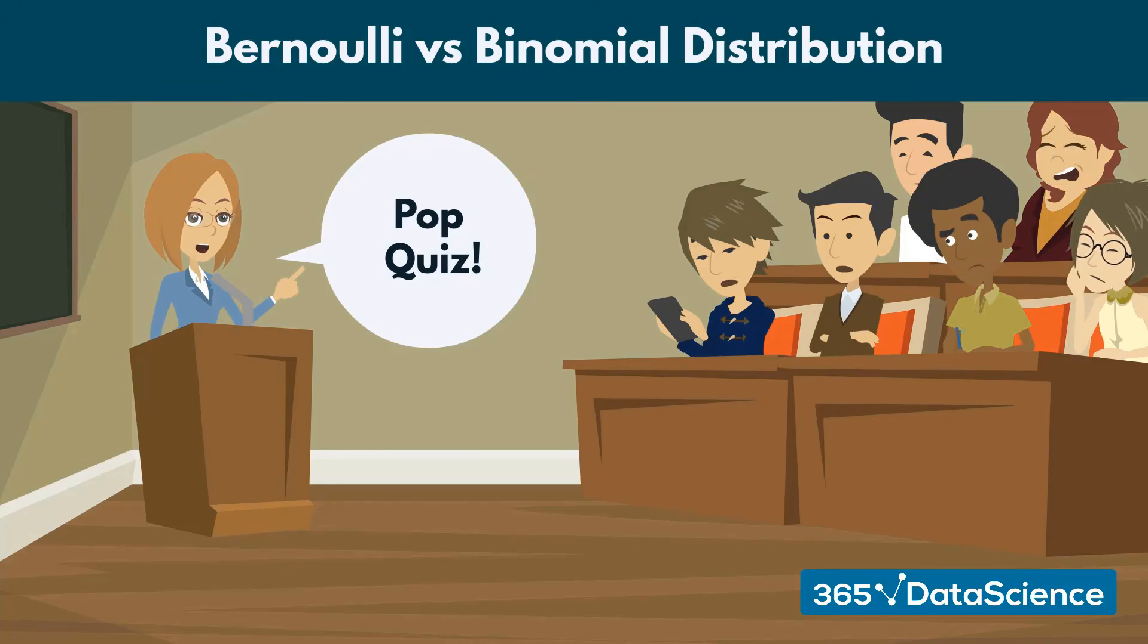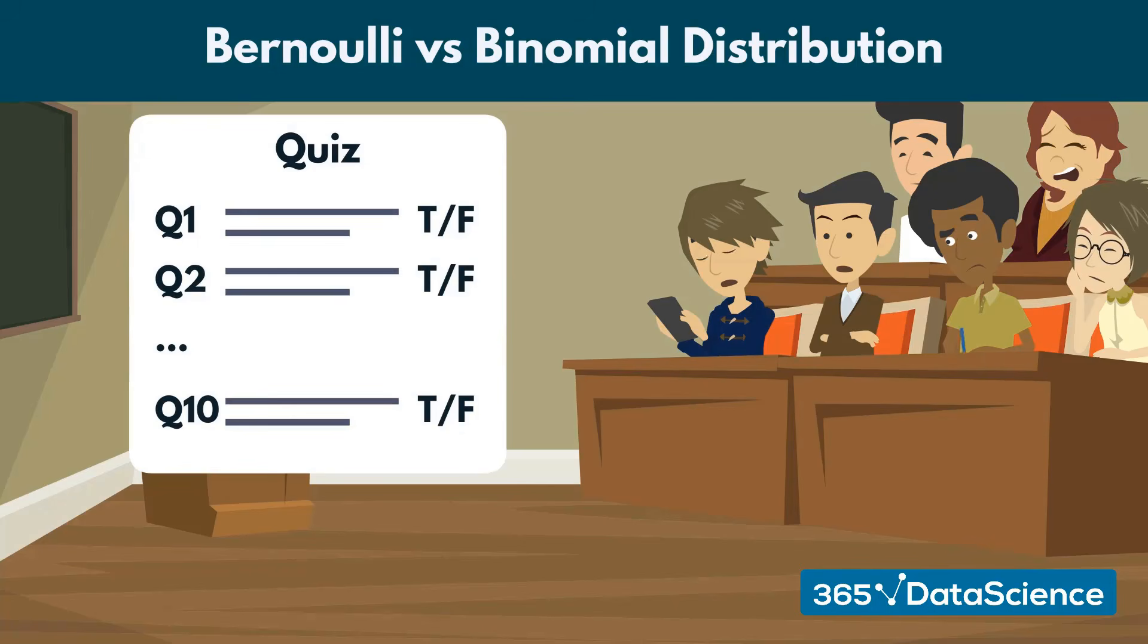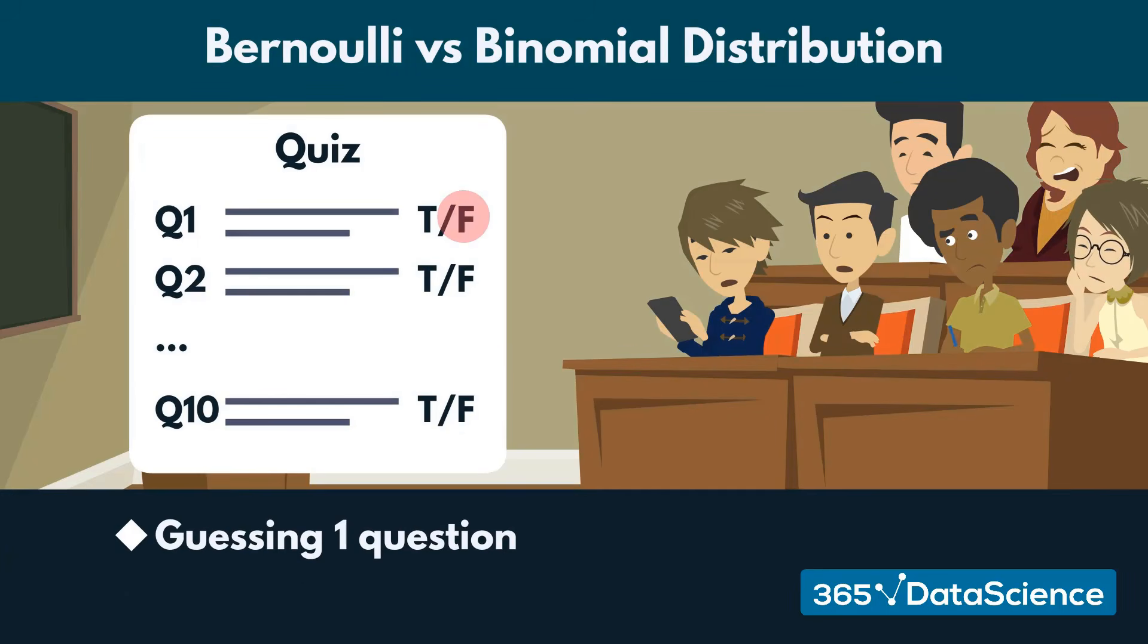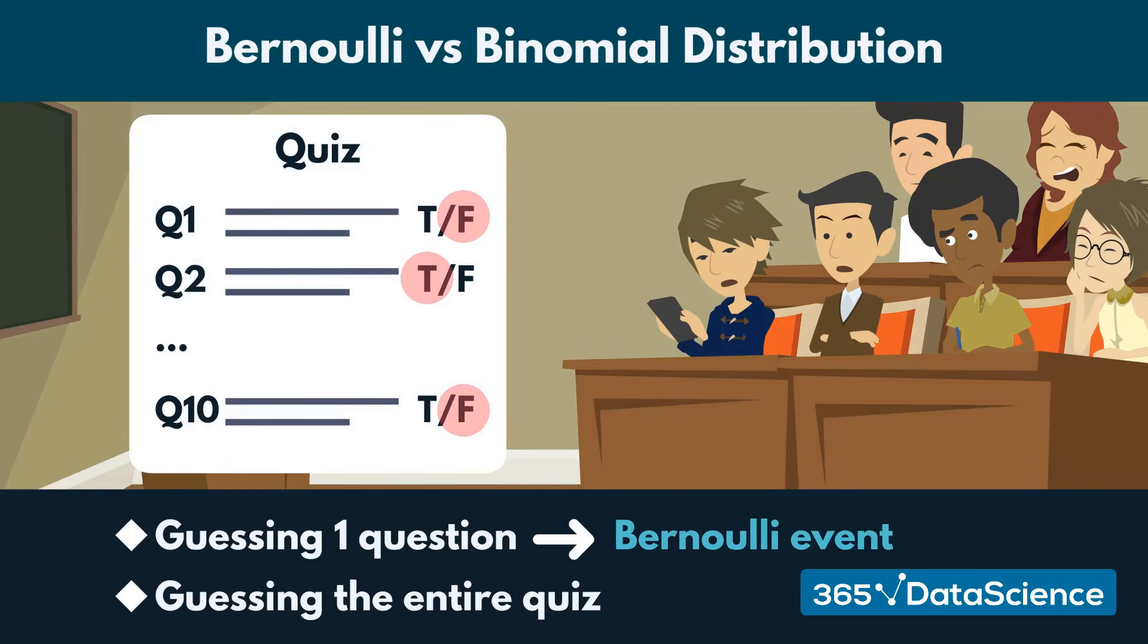Luckily for you, the quiz consists of 10 true or false questions. In this case, guessing a single true or false question is a Bernoulli event, but guessing the entire quiz is a binomial event.